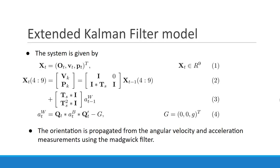The model for the EKF is given by orientation, velocity, and position. Given acceleration in the world frame, velocity and position are propagated using equations 2 and 3. Acceleration is converted to the world frame from the body frame using equation 4, where Qt is the orientation in quaternions. Orientation is propagated given IMU measurements using the Madgwick filter.